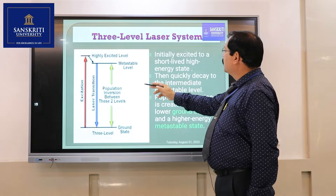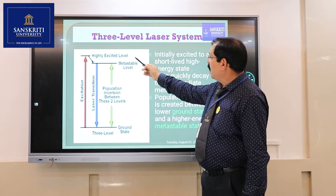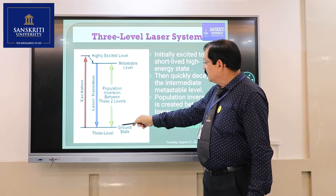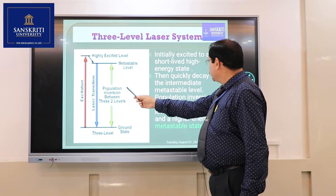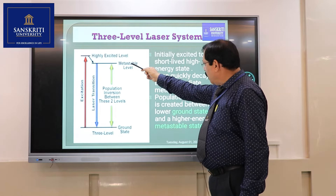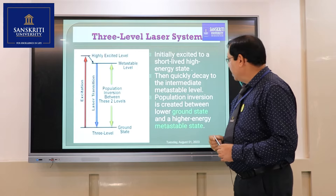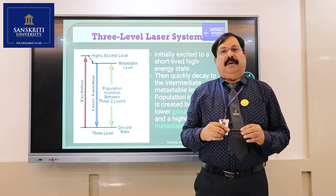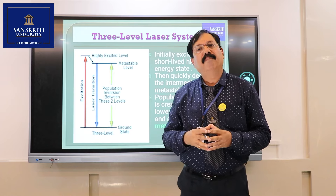Ruby laser is also known as a three-level laser system. There are three energy states: the ground state, the highly excited level, and the metastable state. Population inversion occurs between energy state 2 and energy state 1. The atom is initially excited to the high energy state, then quickly decays to the intermediate metastable state, where chromium ions stay for about 10 to the power of minus 3 seconds. The transition back produces stimulated emission and laser light. A demerit of ruby laser is that the beam is produced in the form of pulses.